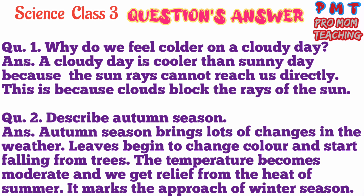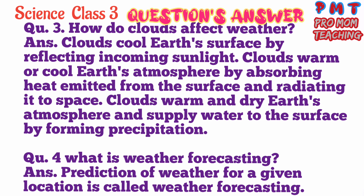Question number two. Describe autumn season. Answer: autumn season brings lots of changes in the weather. Leaves begin to change colour and start falling from trees. The temperature becomes moderate and we get relief from the heat of summer. It marks the approach of winter season.